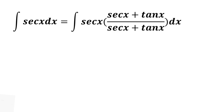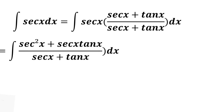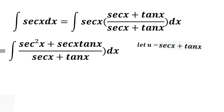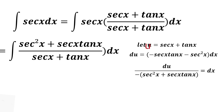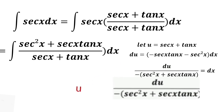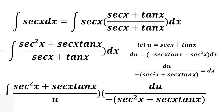To find the integral of secant x dx, we multiply secant x by secant x plus tangent x over secant x plus tangent x, giving the integral of secant x times (secant x plus tangent x) over (secant x plus tangent x). Distributing secant x, we have the integral of (secant squared x plus secant x tangent x) over (secant x plus tangent x). Let u equal secant x plus tangent x, so du is equal to negative secant x tangent x minus secant squared x dx, meaning du over (negative secant squared x plus secant x tangent x) equals dx.